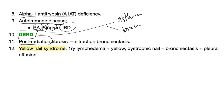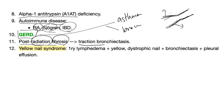After radiation of a cancer, you get fibrosis, and after fibrosis you get traction bronchiectasis. Because of the fibrosis, you have destroyed the elastic tissues in the bronchi, which then dilate. This is post-radiation fibrosis leading to traction bronchiectasis.